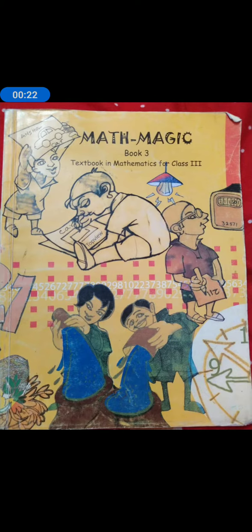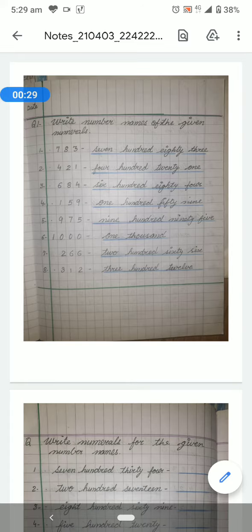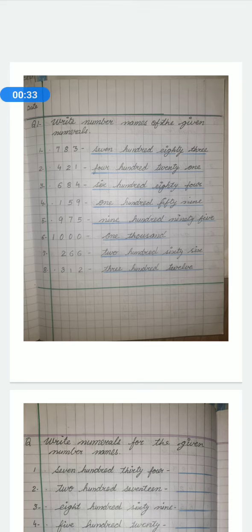Yesterday in the live class we had a small review section. In that section I asked you regarding the numbers that you have read up till now. That means in class 2 you have read up till 1000.